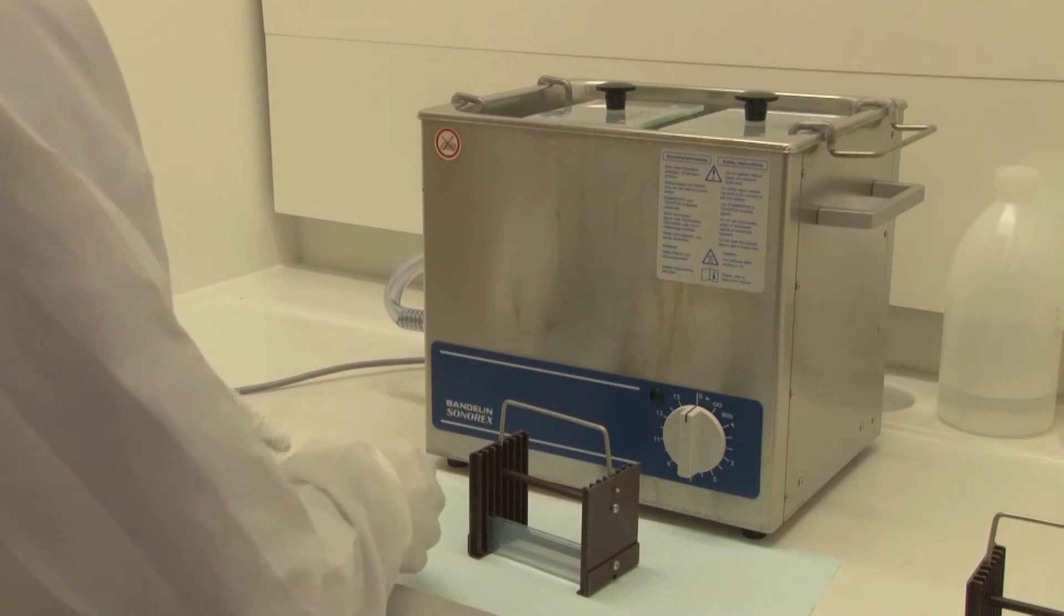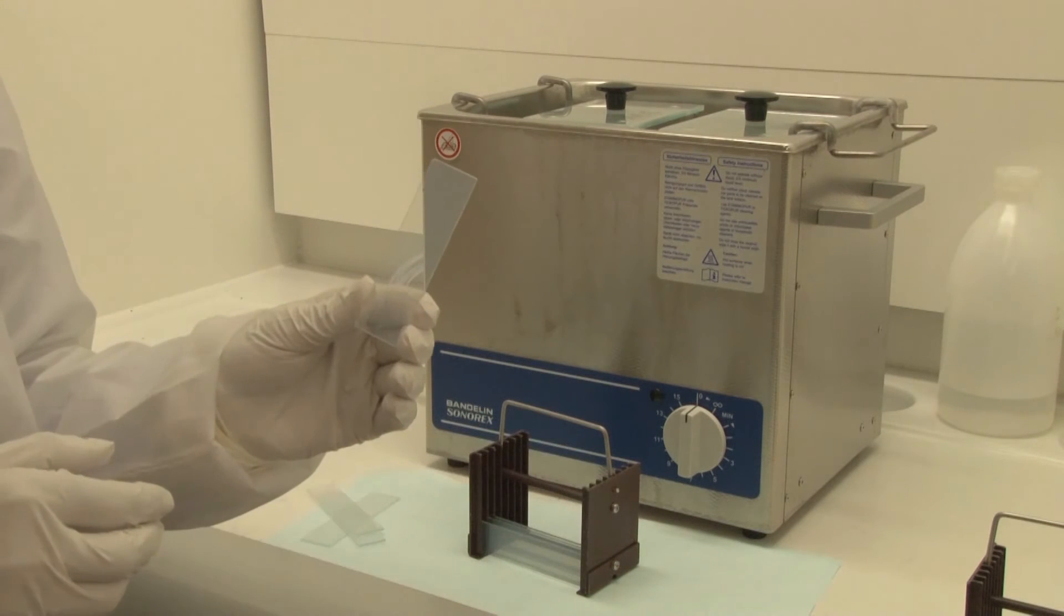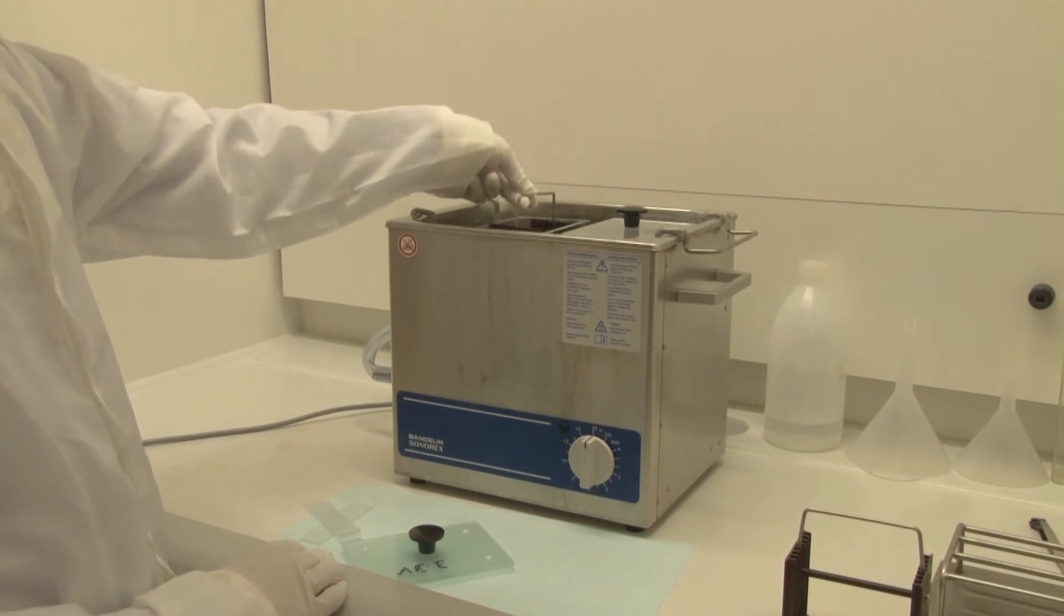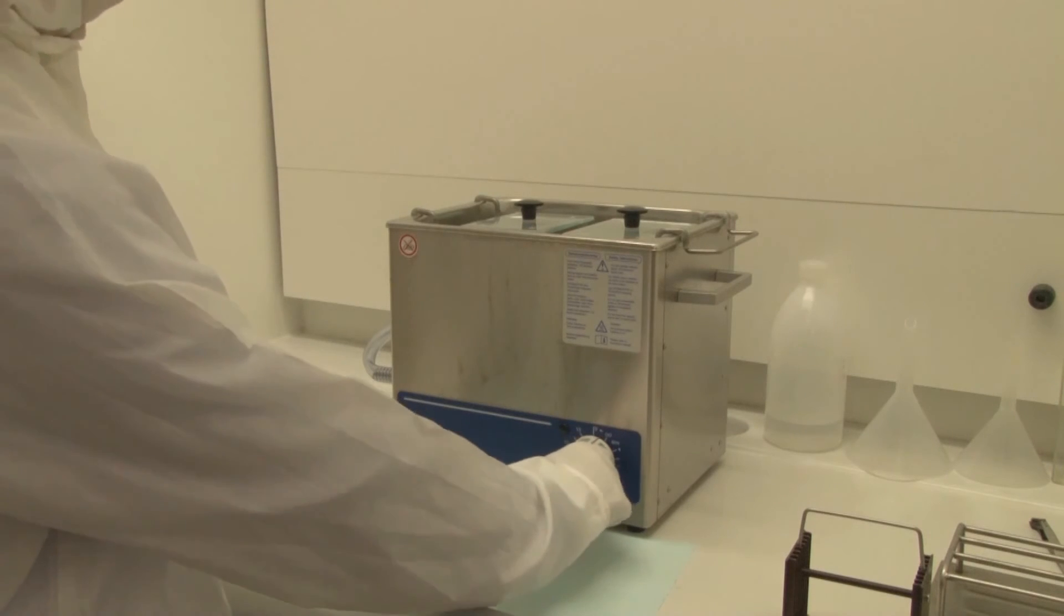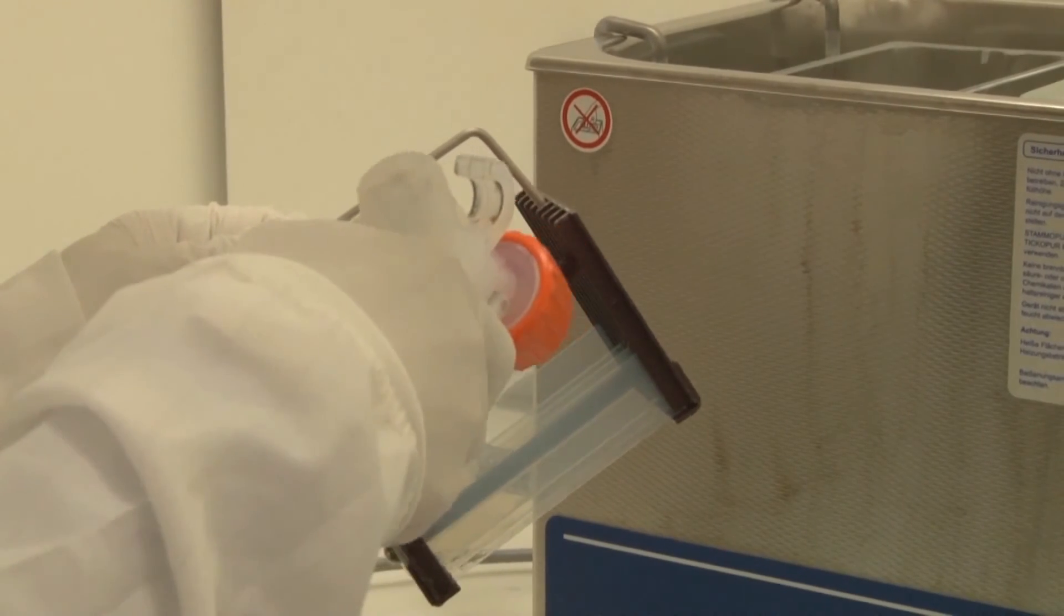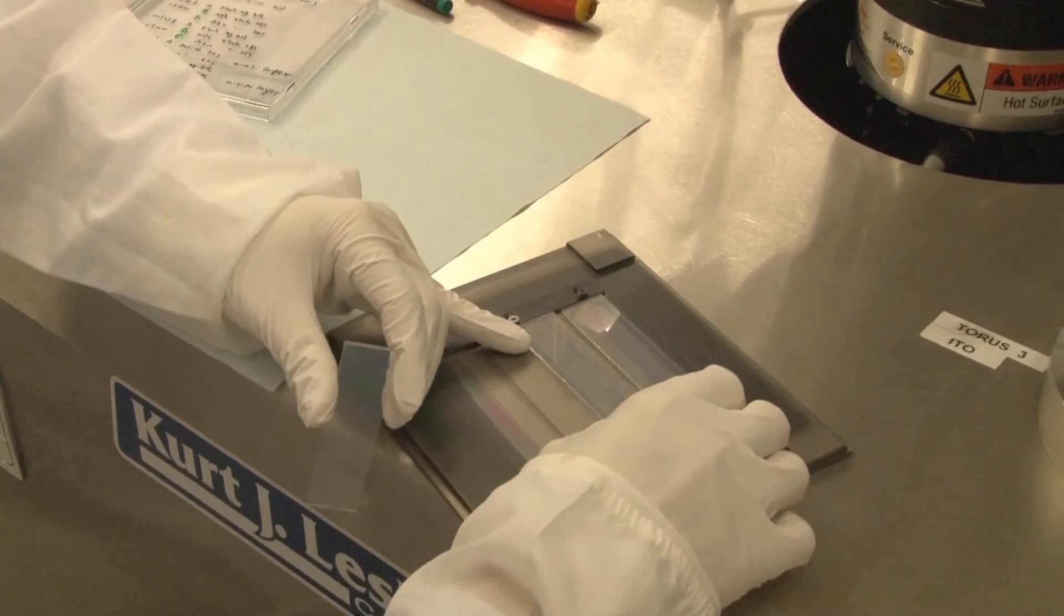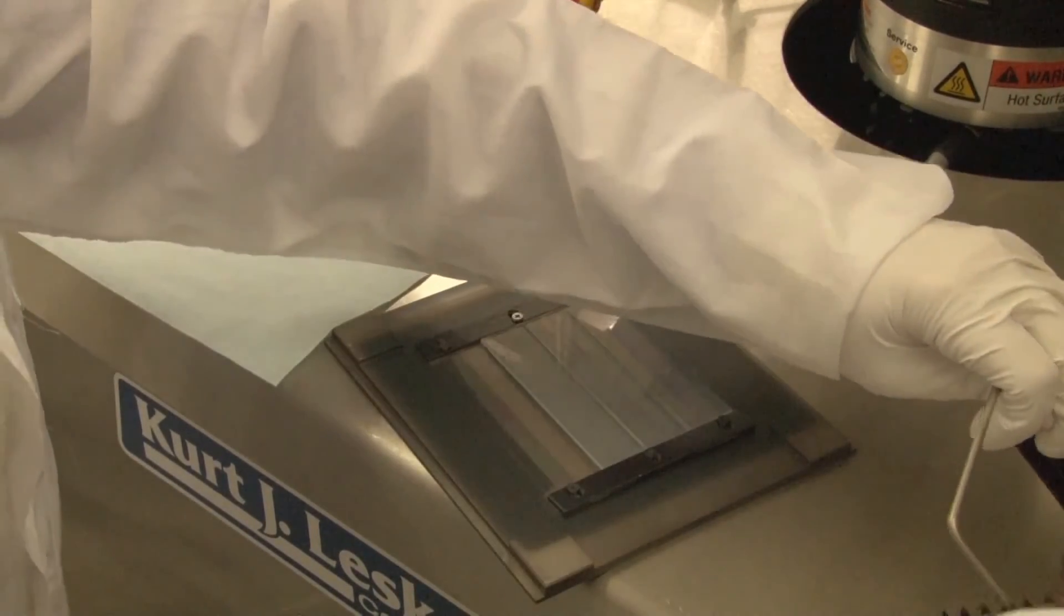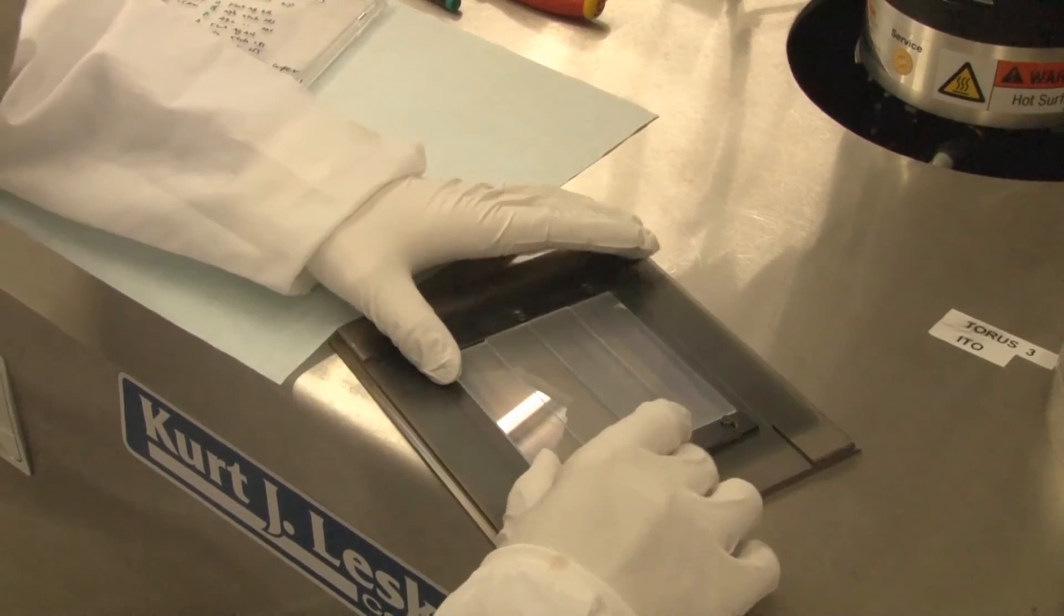Before deposition, the samples have to be cleaned in a so-called ultrasonic cleaning bath. The potential dirt and dust particles are removed. Since the solar cell device is only several hundreds of nanometers up to a few microns thick, a dust particle on the substrate will generate a shunt between the front and back contact in the final solar cell. Here, we use a substrate that is coming from the Japanese Asahi Glass Company and already has a TCO coating on it. The TCO coating is a fluorine-doped tin oxide and is responsible for the hazy color.